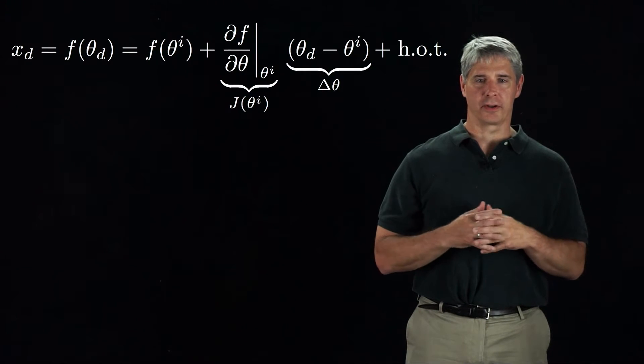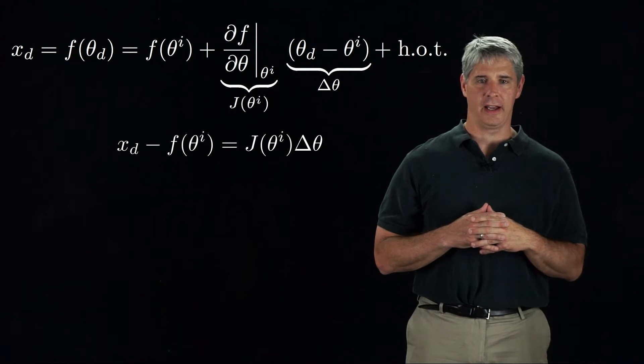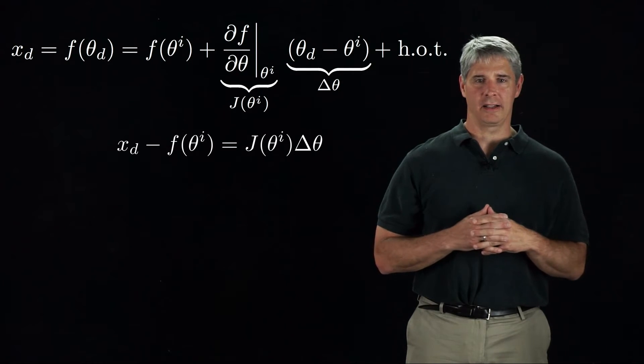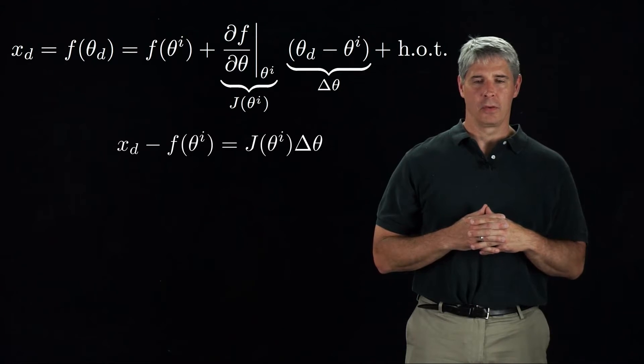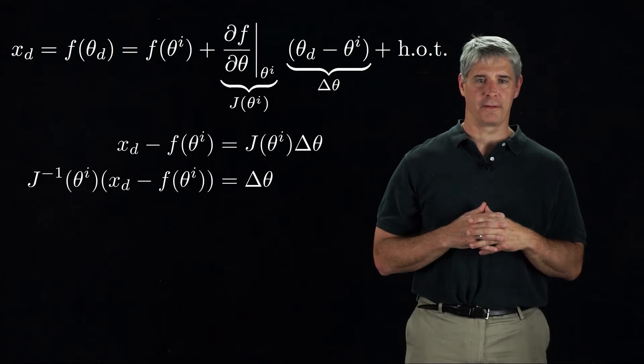If we ignore the higher-order terms, this simplifies to x-d minus f of theta-i equals J of theta-i times delta-theta. We can solve for delta-theta as J inverse times x-d minus f of theta-i.